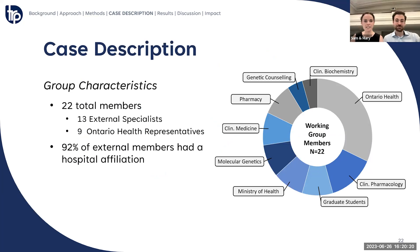There were 22 members total, nine of which were Ontario Health representatives, with the other 13 being external specialists from a variety of related disciplines, such as clinical biochemistry, genetic counseling, pharmacy, clinical medicine, molecular genetics, clinical pharmacology, drug evaluation at the Ministry of Health, and ourselves as graduate students. Most of the professions were represented by two members, as is shown in the graph. And it's also of note that 92% of the external specialists reported a hospital as their primary affiliation.